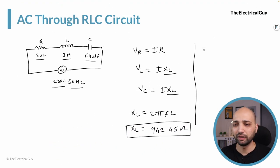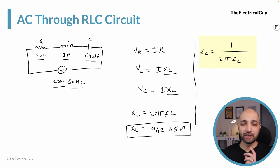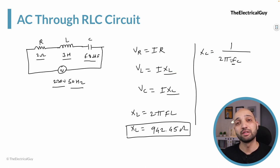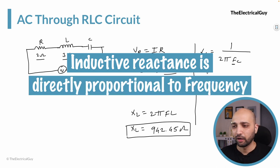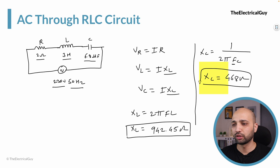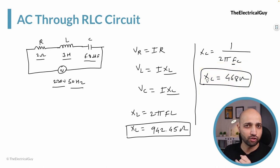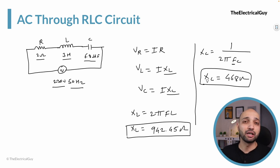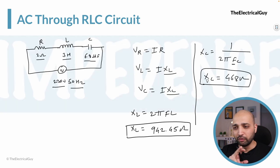Similarly, we can find XC using the formula XC = 1 / (2πfC). In this case, capacitive reactance is inversely proportional to frequency, whereas inductive reactance is directly proportional to frequency. Putting the values into the equation gives XC = 468 ohms. So we now have all three oppositions: resistance of 2 ohms, inductive reactance of 942.45 ohms, and capacitive reactance of 468 ohms. We need a comprehensive term — impedance — to combine all these.